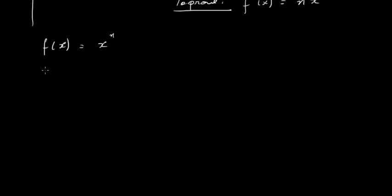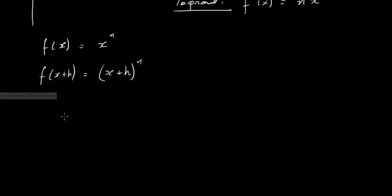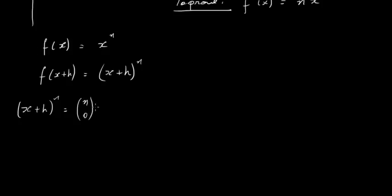The first thing I need to do is write down f of x plus h. Well, that's just going to be x plus h to the power of n. So if f of x is equal to x to the power of n, then f of x plus h is x plus h to the power of n. I'm going to expand this using the binomial theorem. So x plus h to the power of n expands as: n choose 0, times x to the power of n, times h to the power of 0 — that's our first term. Plus n choose 1, times x to the power of n minus 1, times h to the power of 1.